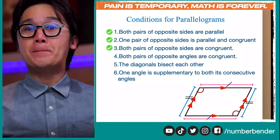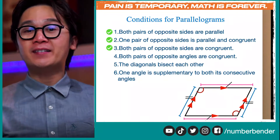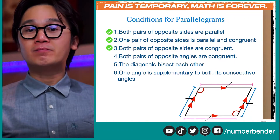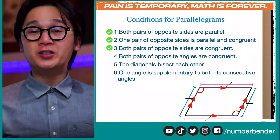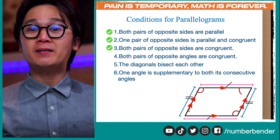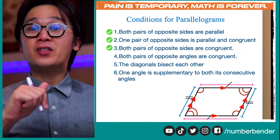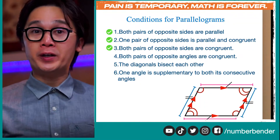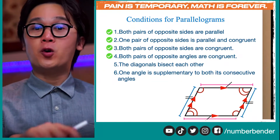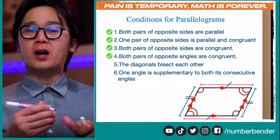Condition four: both pairs of opposite angles are congruent. We're seeing that the corners are the same angle measurement. It needs to be both pairs of opposite corners — the first pair of opposite corners are congruent, and we also need to make sure that the other pair of opposite corners are also congruent, or the same angle measurement. Therefore we satisfy condition number four, which is both pairs of opposite angles are congruent.